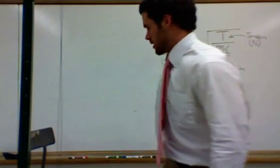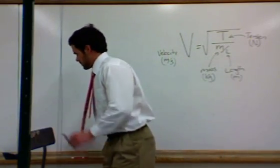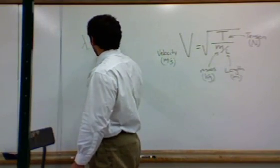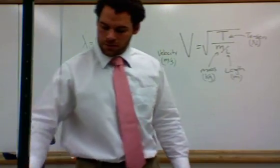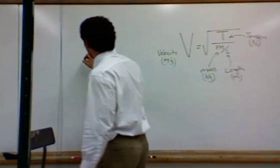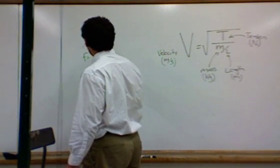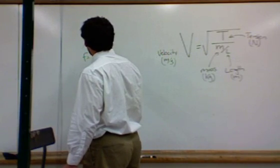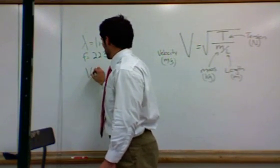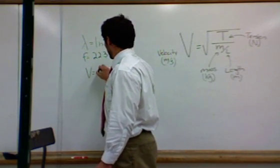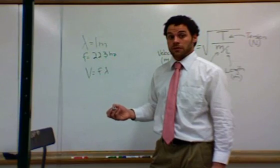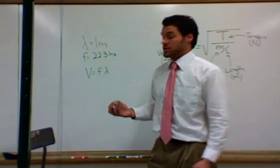So right now, I know the length of this here, the wavelength is equal to one meter. And from reading the frequency on here, I know I have a frequency of 22.3 Hertz. From that I can calculate the wave speed, frequency times the wavelength. And I get out that the wave speed on this particular string right here is 22.3 meters per second.